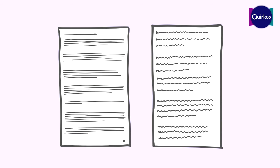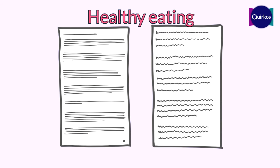For example, we might have a code called 'healthy eating' and we can compare what different groups of people have said about healthy eating — for example, whether older people were more into healthy eating than younger people, or what different ideas people had about what healthy eating is.